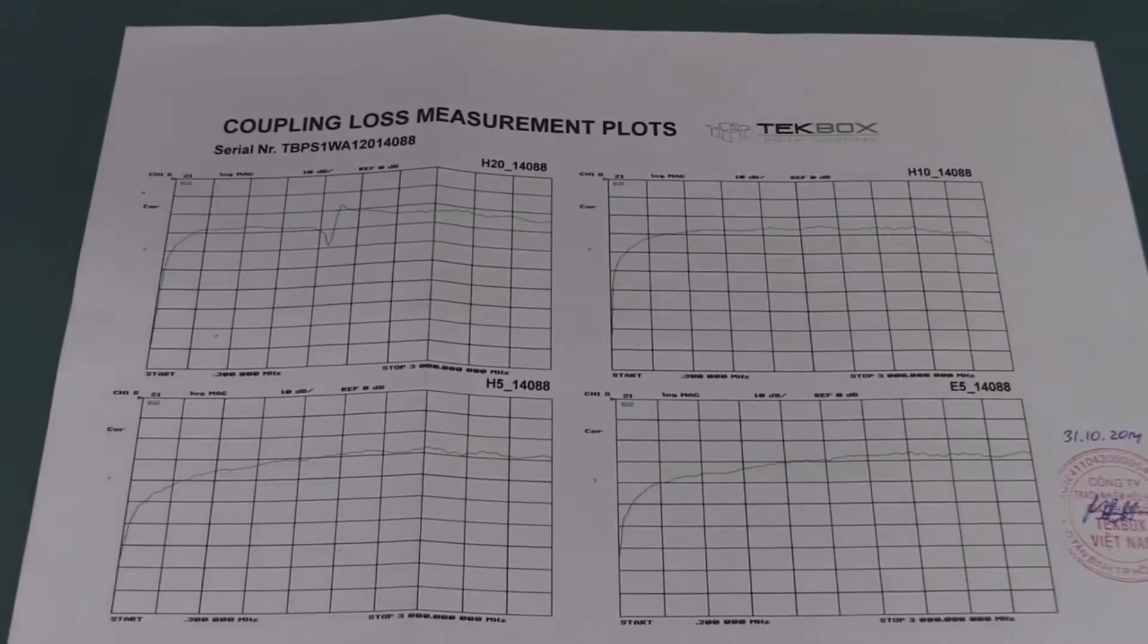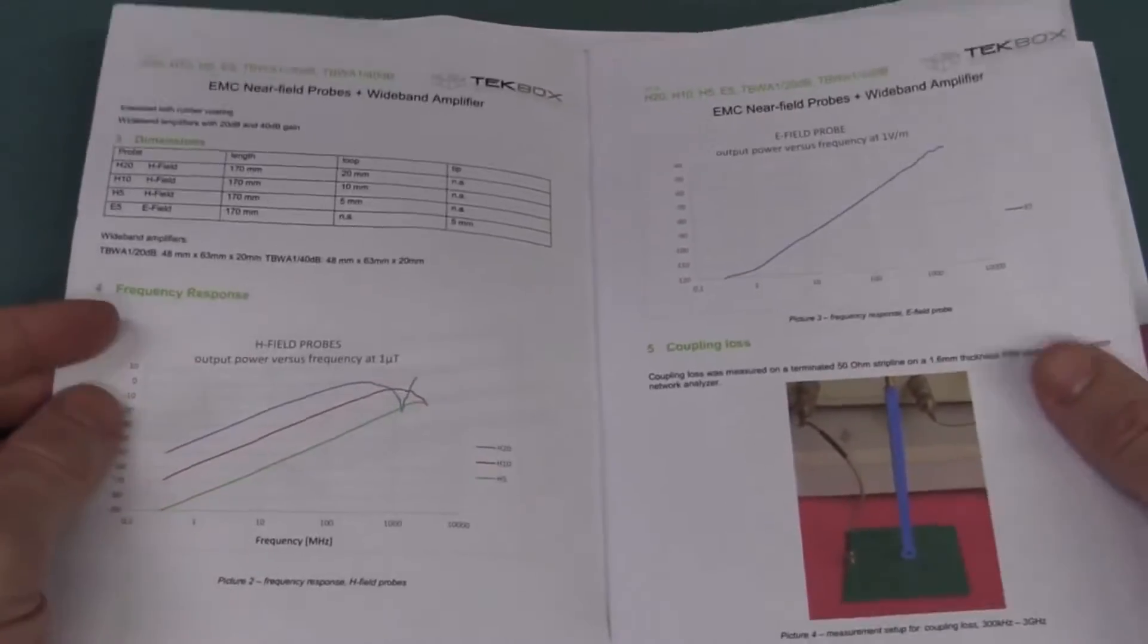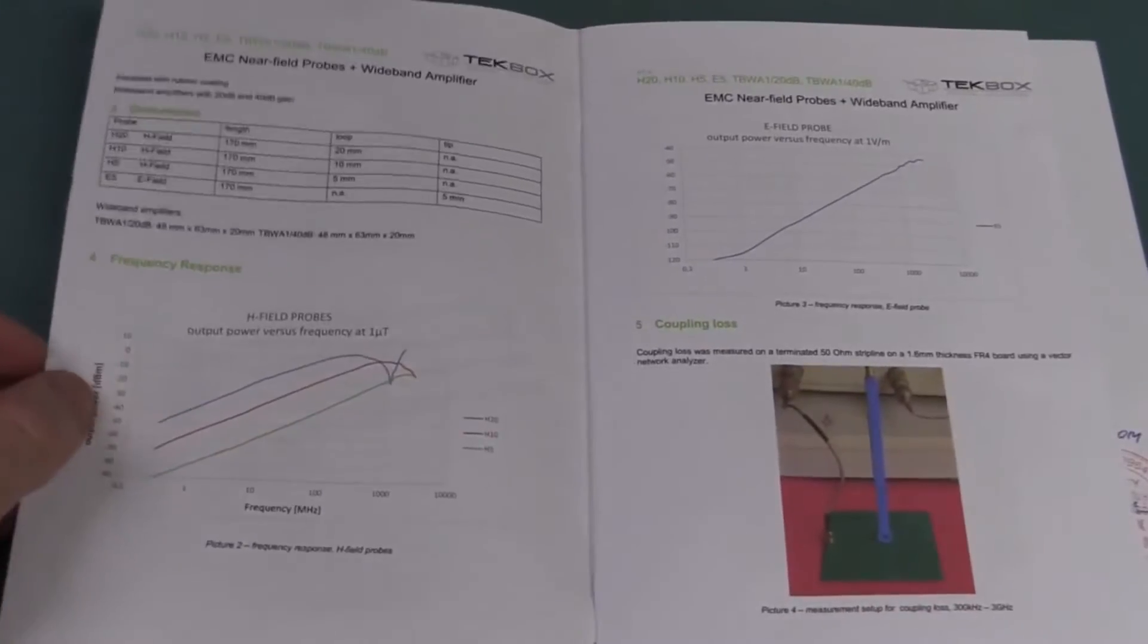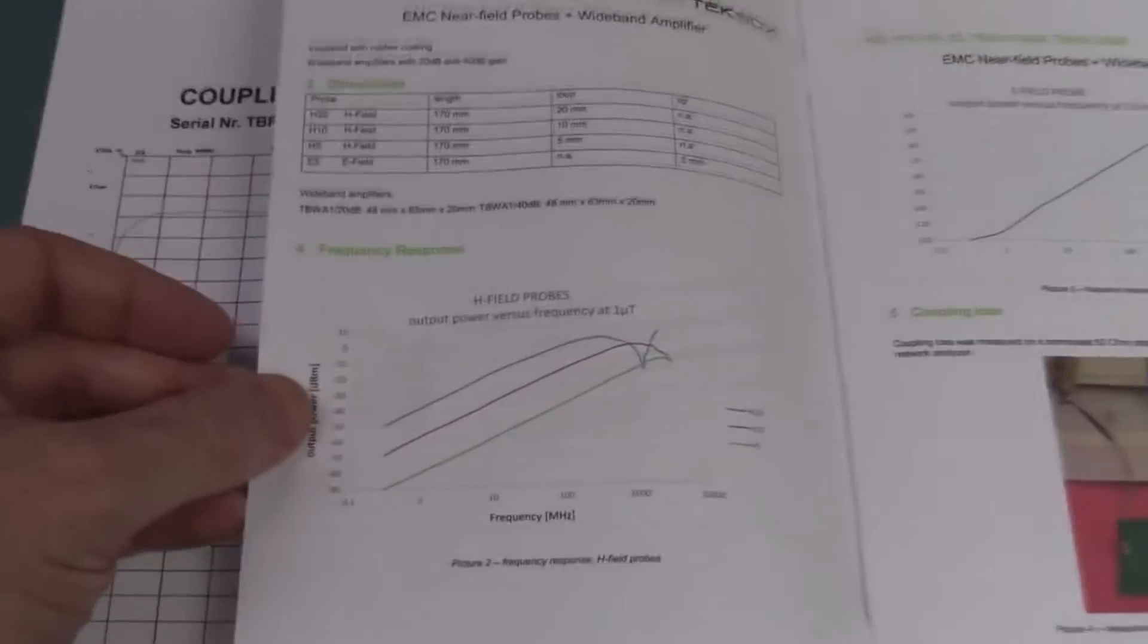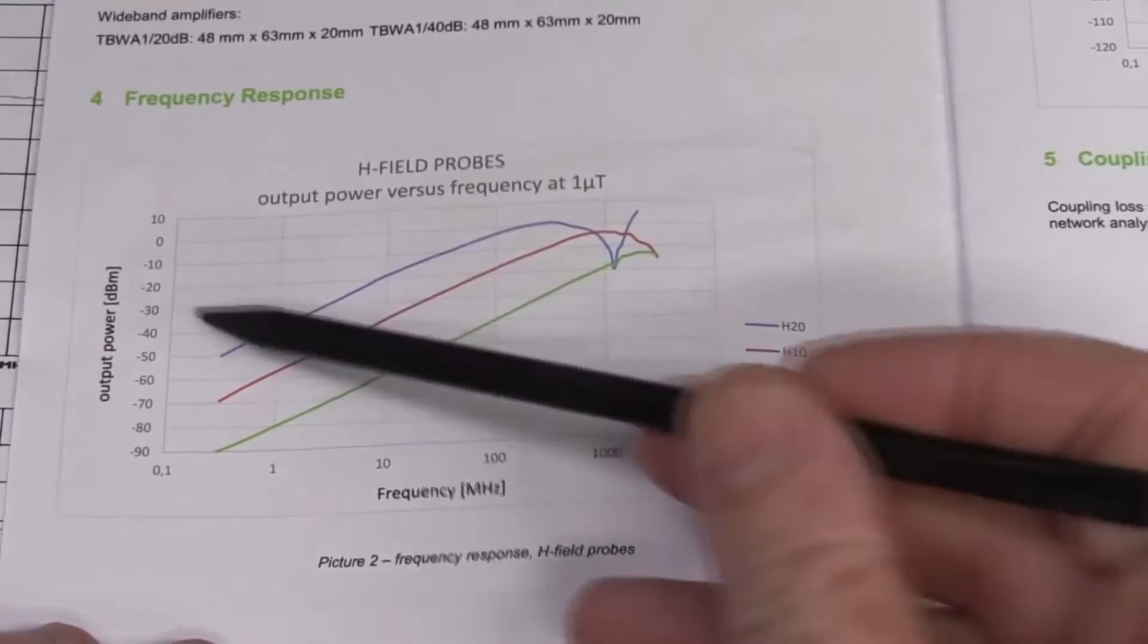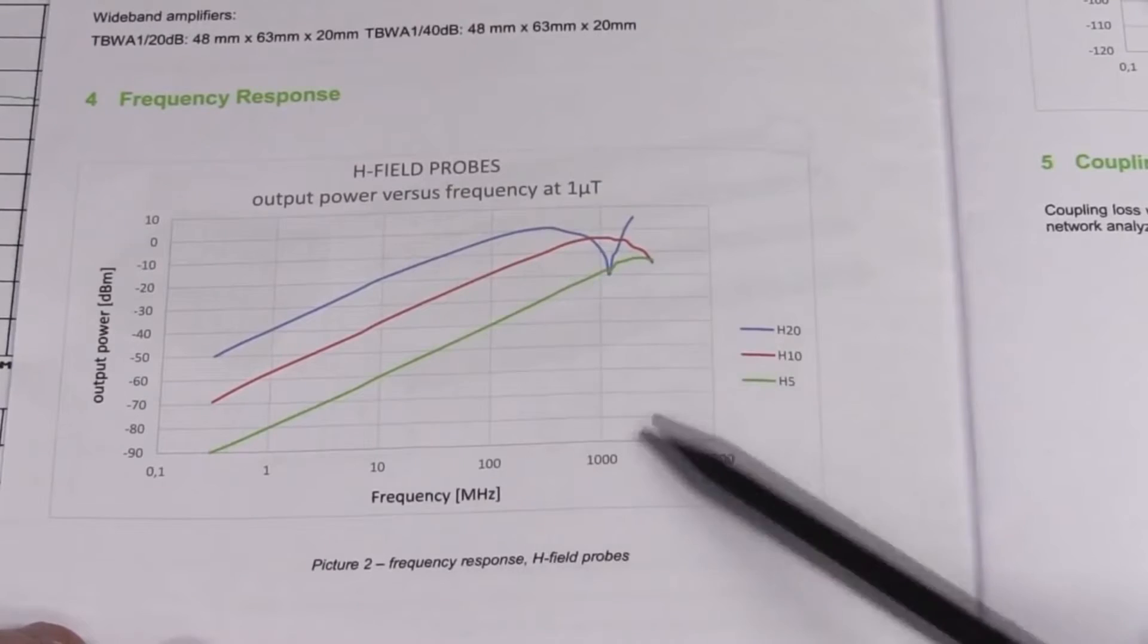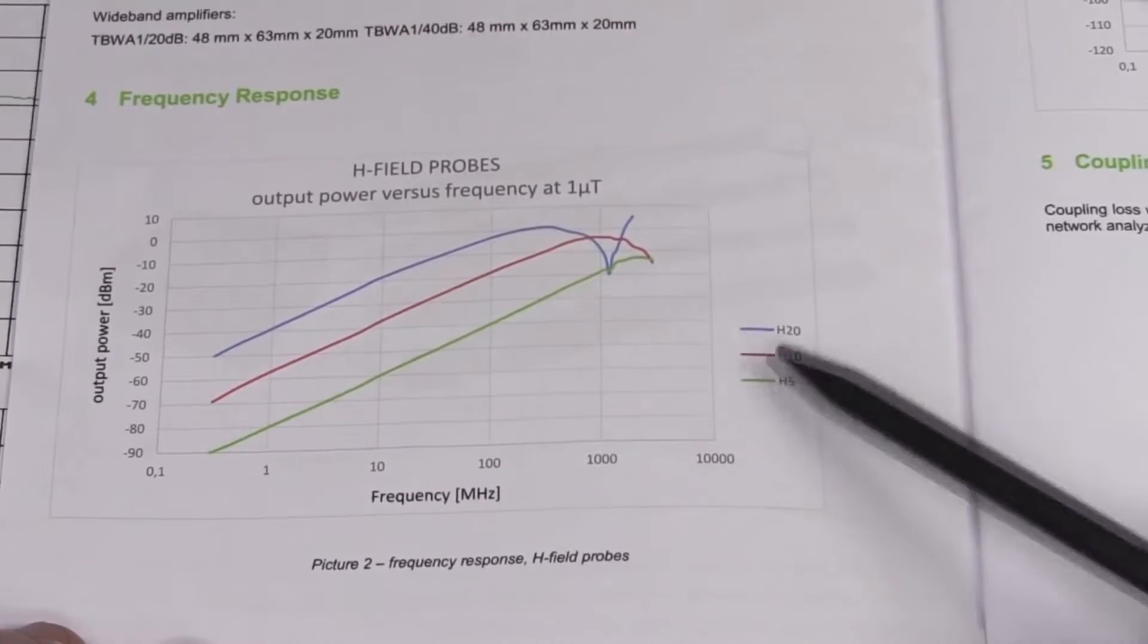But if we have a look at the manual, we can probably find that the E-field is different. Yes! First page, here we go. This is what I'm talking about. So your magnetic or H-field probes are going to give an output power in dBm versus frequency.